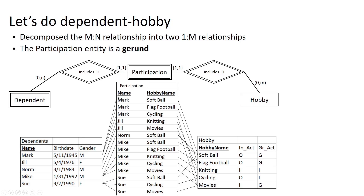By linking this together using the participation table, we can see that Mark plays softball, which is an outdoor group activity, and plays flag football, which is also an outdoor group activity, and does cycling, which is an outdoor individual activity. Jill does knitting, which is an individual indoor activity, and movies, which is an indoor group activity, and so forth. So we're capturing all of these relationships without introducing any redundant data.